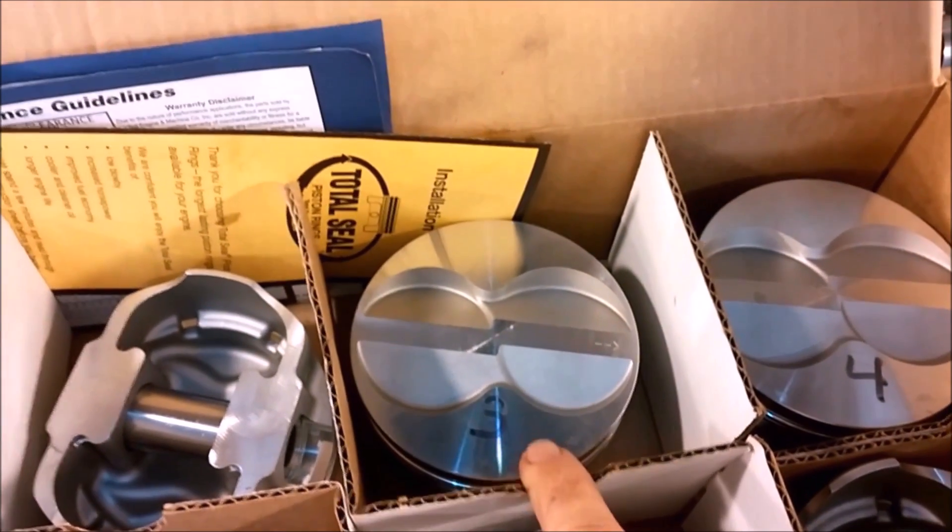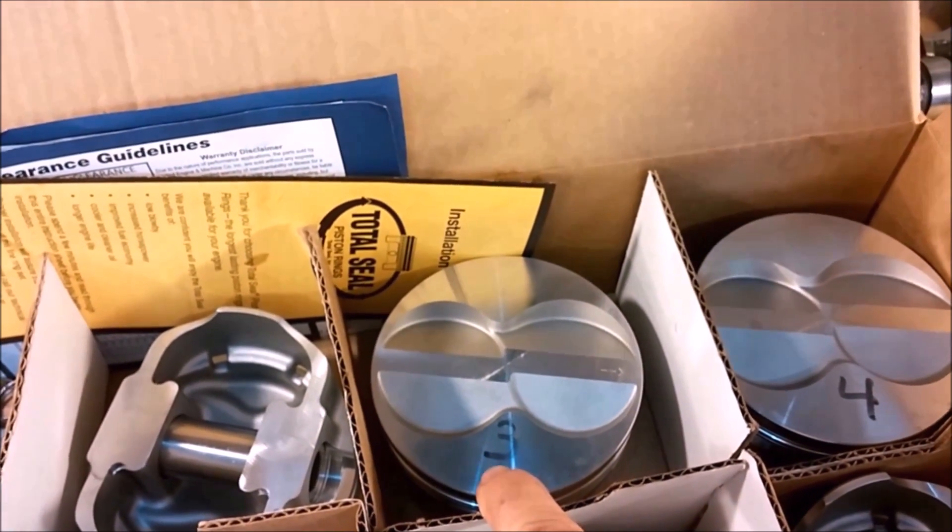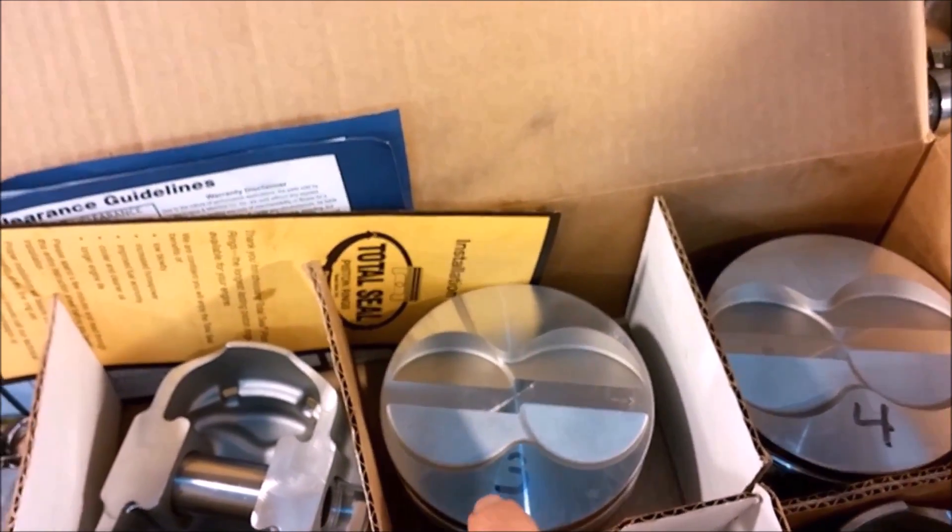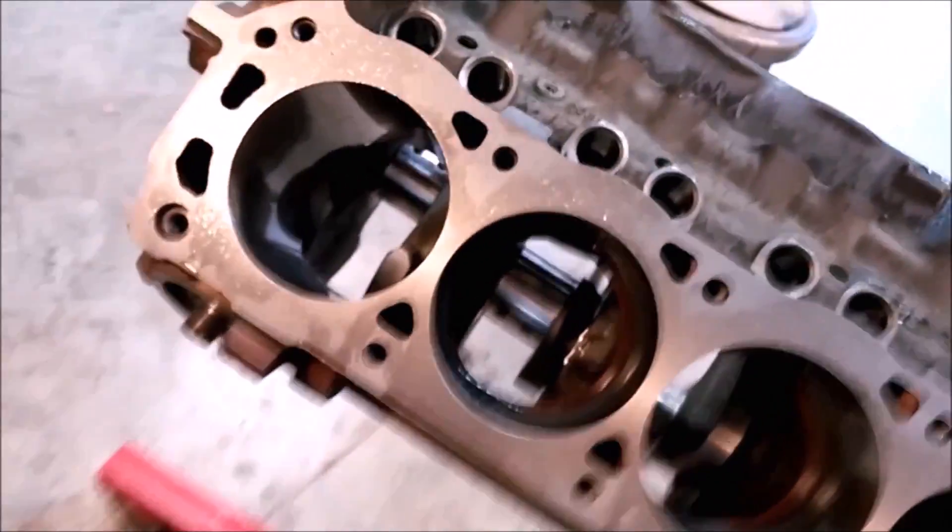And then of course, if the pistons have to go in particular cylinders, then we have to make sure that the rod is oriented on that piston so that it can go in that hole next to that counterweight. So first we select the cylinder that we're going to assemble.